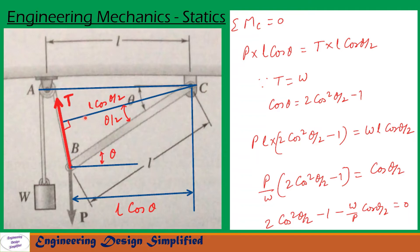The angle between this line and the string is 90 degrees. T is acting in that direction — that is the tension in the string. Since weight W is attached on the other side of the string, T equals W.